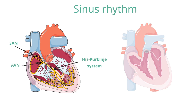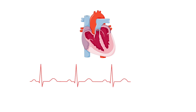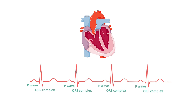In sinus rhythm, there are regular impulses generated by the sinoatrial node, which result in P waves on the ECG. Every P wave is followed by a QRS complex in a one-to-one pattern.